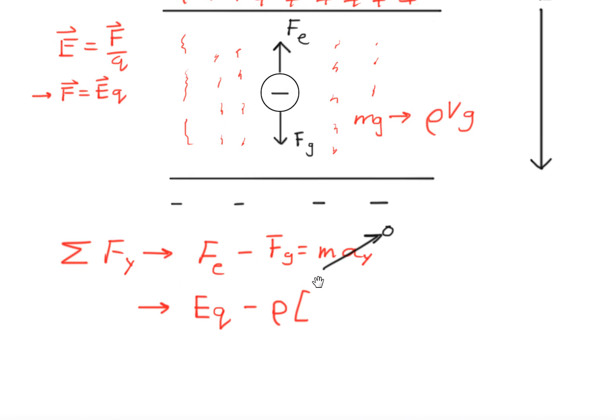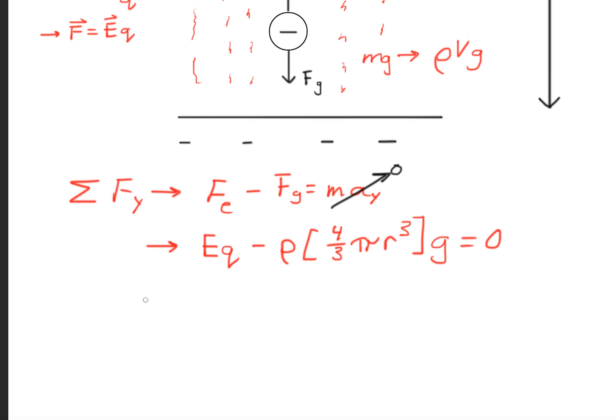Multiplied by gravity, all set equal to zero. Now we set these forces equal to each other, and now we're going to isolate r.